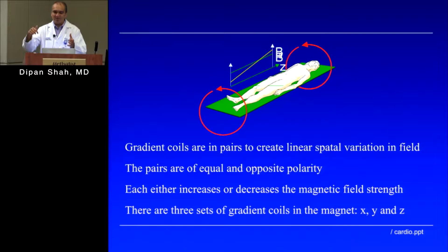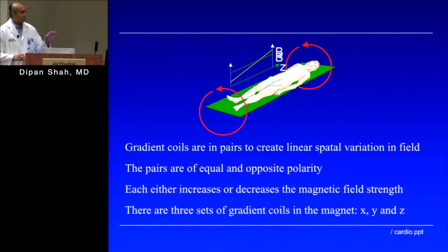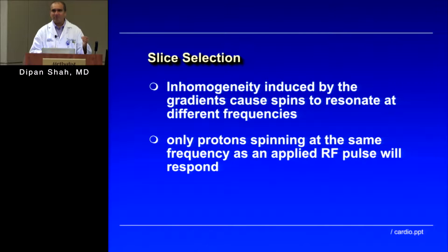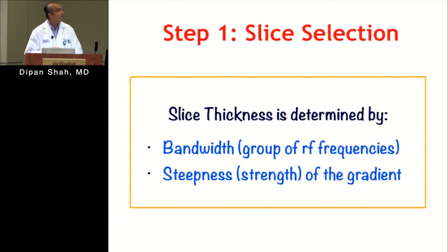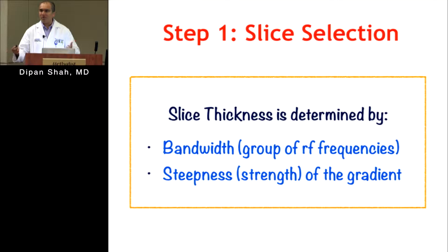The slice-select gradient allows me to pick the slice I want to image by applying this gradient and sending in an RF pulse at the frequency corresponding to that specific location. The thickness of that slice is determined by the bandwidth and the steepness of the gradient. The basic concept is simply slice selection, made possible by applying a gradient — without the gradient, all protons spin at 64 megahertz and there's no selective excitation.